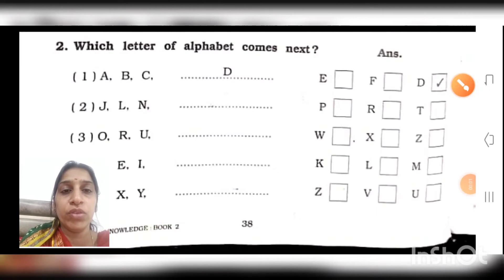Now number 3: O, R, and U. After O, which letter is coming? P. After P, Q. So here is a gap of two alphabets. After O comes P and Q, which we have skipped. We moved to R. After R, we skipped S and T. We moved to U. Then we will skip two more letters after U.